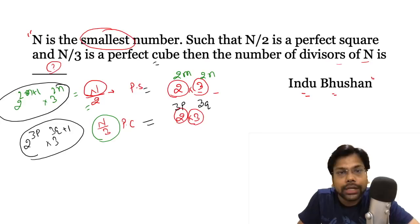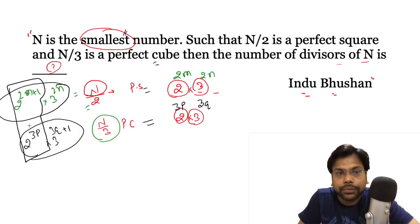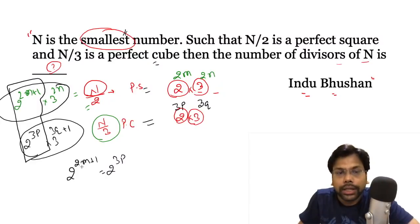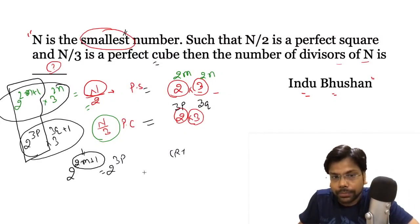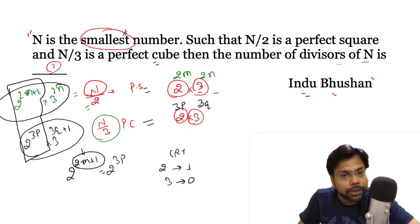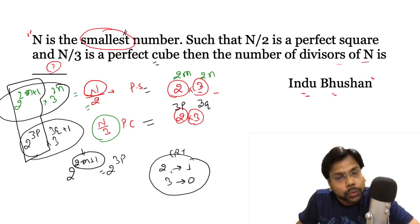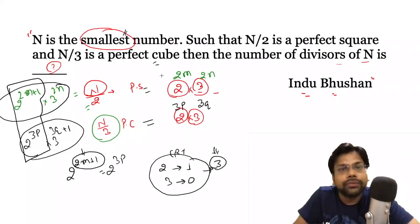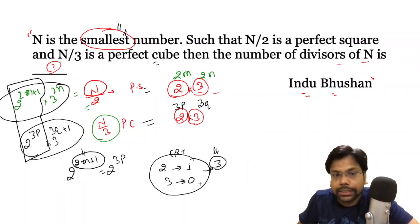We have two expressions for n and we are looking for the smallest n, so we equate the bases. Equating the base of 2: 2^(2m+1) equals 2^(3p). This means the power of 2 must leave remainder 1 when divided by 2, and remainder 0 when divided by 3 — this is the Chinese Remainder Theorem. The least such number is 3: divided by 2 remainder is 1, divided by 3 remainder is 0. So n contains 2 raised to the power 3.